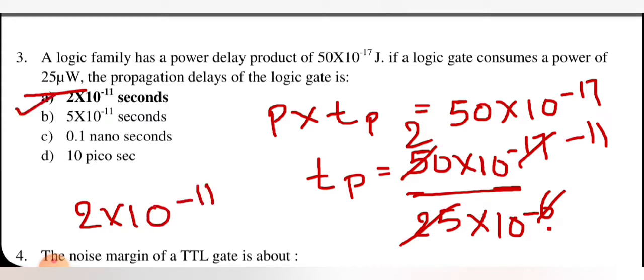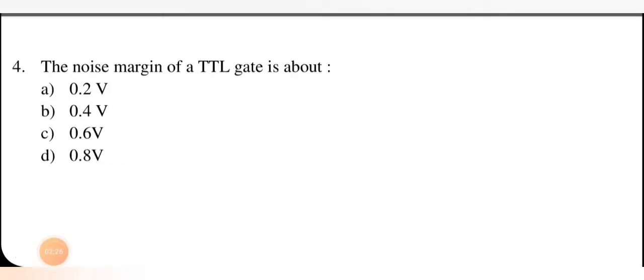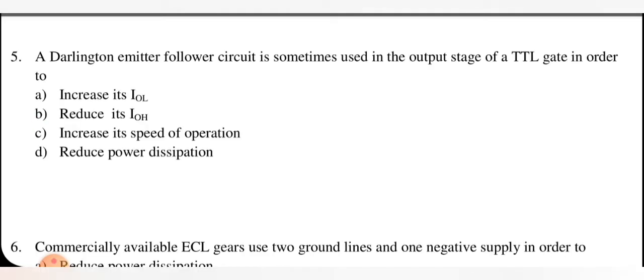The noise margin of a TTL gate is 0.4 volt — please remember this, and the right option is 0.4 volt. The Darlington emitter follower circuit is sometimes used in the output stage of a TTL gate in order to increase its speed of operation. The right answer is C — increase its speed of operation.